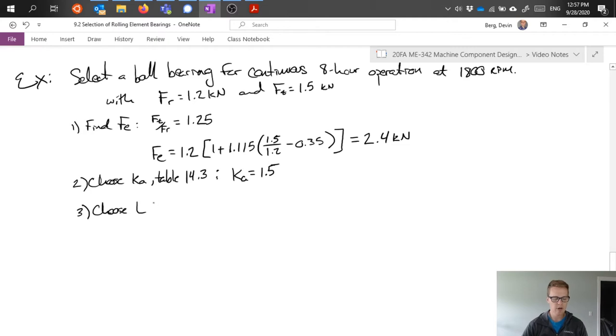Next we need to choose our desired life. The book provides some suggestion in table 14.4. And based on our specifications that we have - this eight hours of operation and whatever simplifying assumptions we can make - the book would suggest a life of 30,000 hours for this particular bearing.